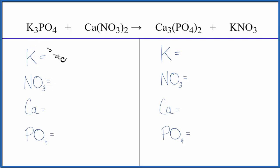Let's see how this works. Three potassium atoms, one nitrate times two, so we have two of those, one calcium, and one phosphate. On the product side, we have one potassium, one nitrate, three calciums, and then one phosphate times two, so two of those.